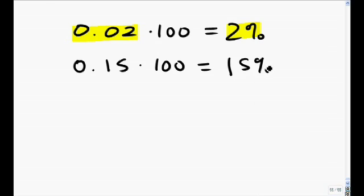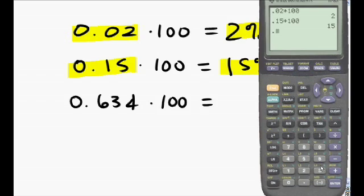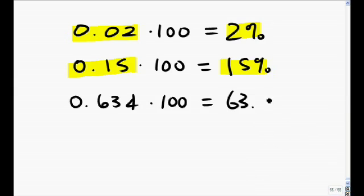If we look at the numerical relationship of 0.15 and multiply by 100, we get 15 percent. That is, 0.15 numerically represents 15 percent. If we look at 0.634 and multiply by 100, we get 63.4 percent. That is, 0.634 numerically represents 63.4 percent.